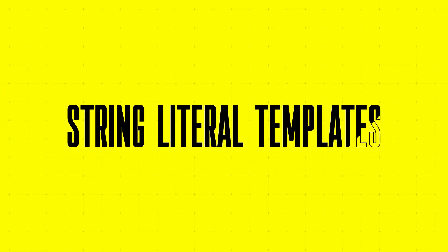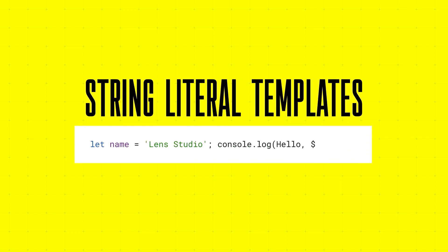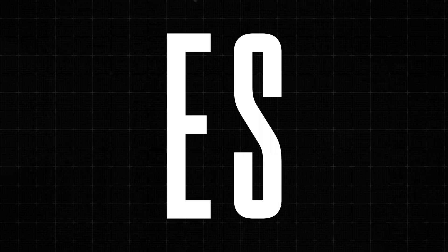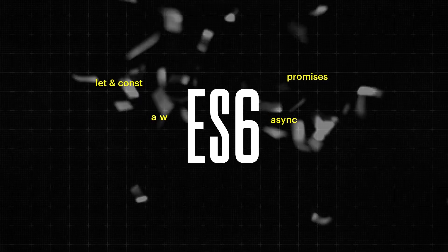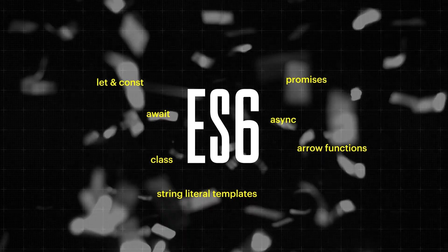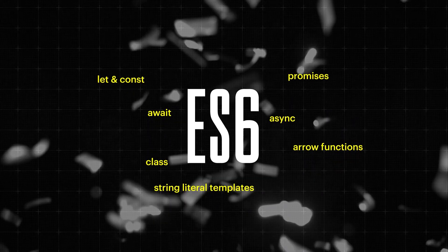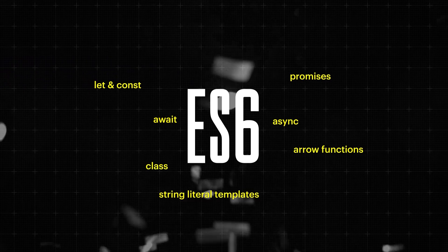Lastly, ES6 brought string literal templates. These allow you to embed expressions within string literals. For example, this will log: Hello Lens Studio. These ES6 features provide powerful new tools for your Lens Studio scripting. Using these features will not only improve your productivity, but also make your code cleaner and more readable.